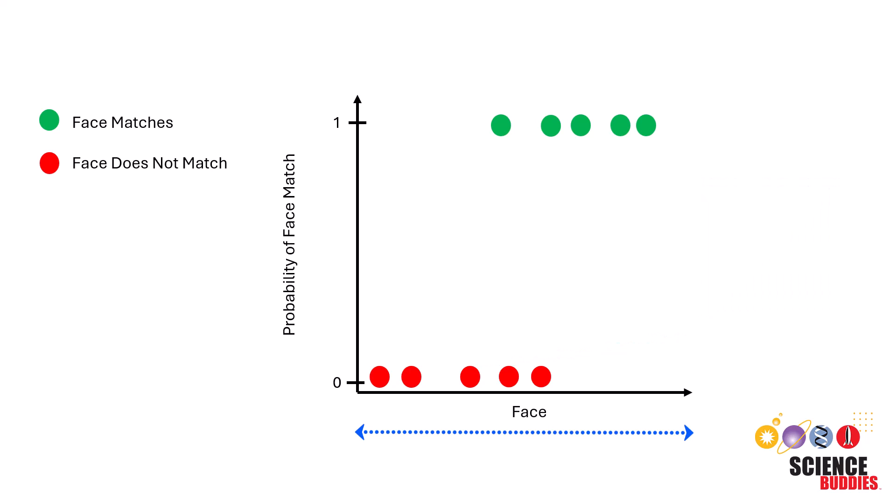The x-axis here represents a kind of similarity score to the face we are identifying. The more to the right a data point is, the more similar it is to the face we are identifying. And the more to the left a data point is, the more dissimilar it is to the face that we are identifying.